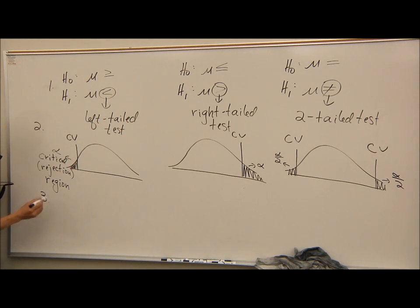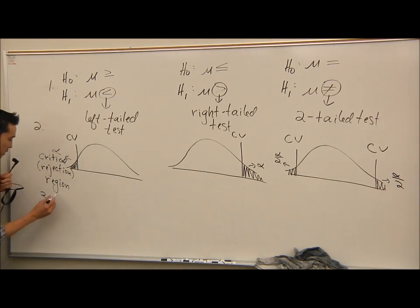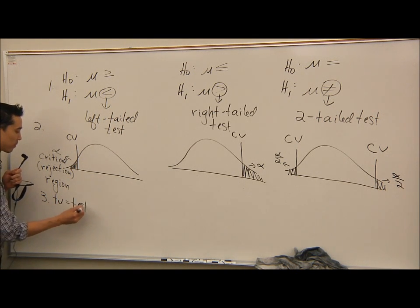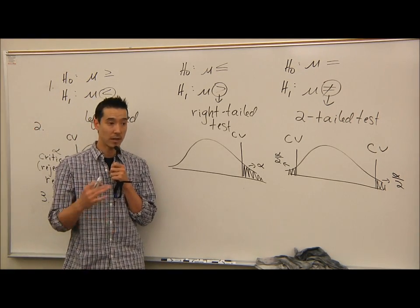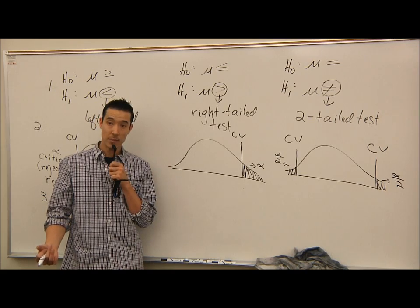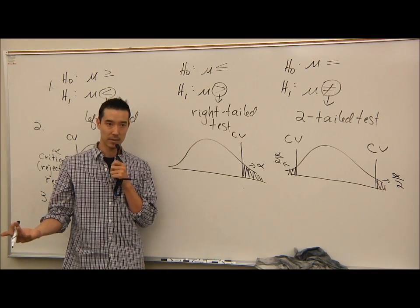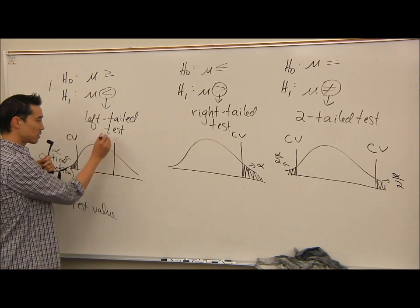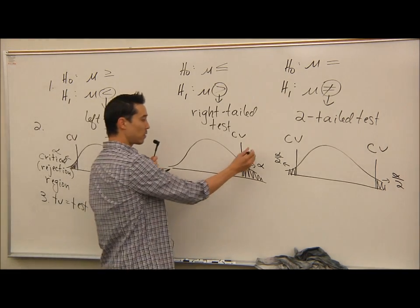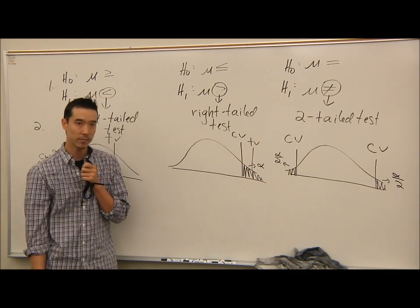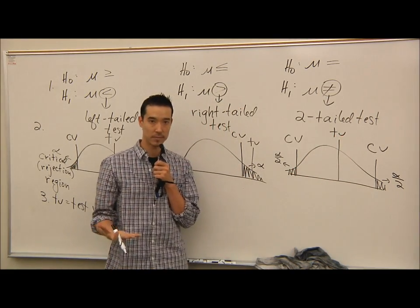Step three: compute the TV — the test value. You'll have a formula for your test value in every hypothesis test. That test value is going to drop somewhere on your graph. Either it falls outside the rejection region in the non-critical region, or it falls inside the rejection region.